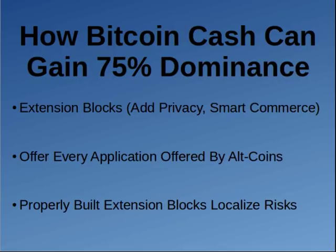With ZKSNARKs in something like Zcash, there's no blockchain auditability. But if you use ZKSNARKs with Bitcoin Cash, you send your Bitcoin Cash to an extension block, then you can use the ZKSNARK protocol within that extension block, but you can have a rule that you can't withdraw more than was put in. That way, if there's a bug where coins are duplicated, it doesn't affect the main chain.